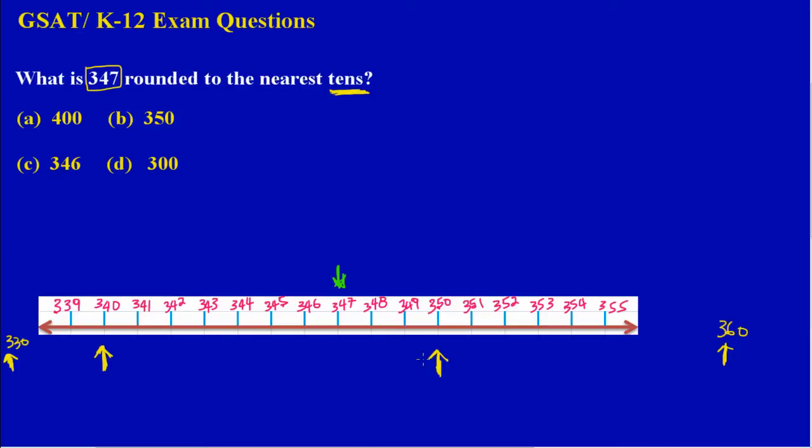Out of all these tens marked on my number line, I'm going to look at the one that is closest to 347. In rounding to the nearest tens, it would be 350. 350 is the closest to 347, so this is my answer - rounded off to the nearest ten would be 350.